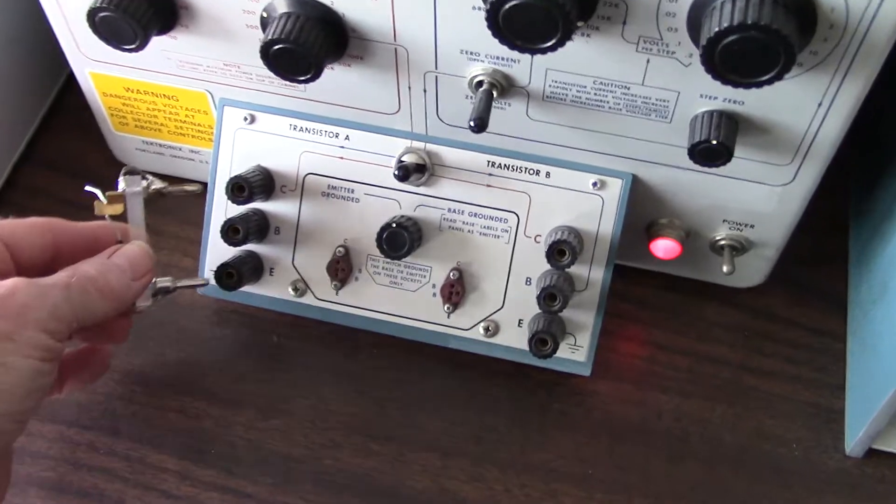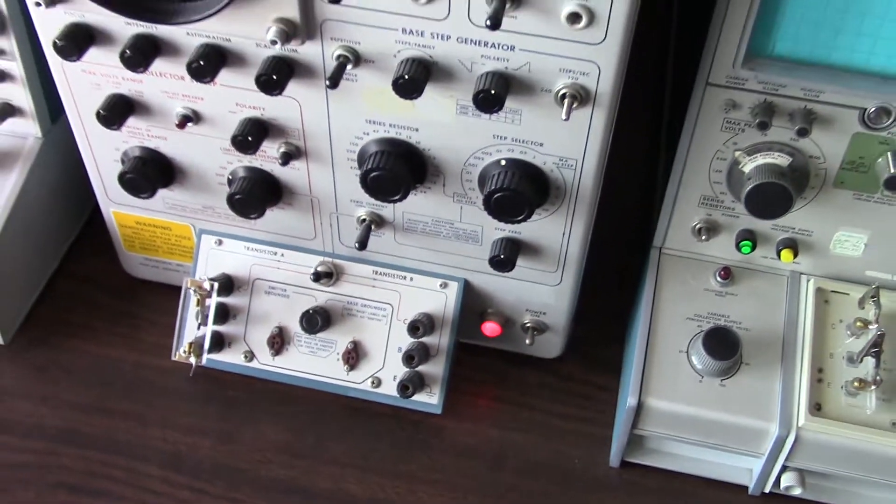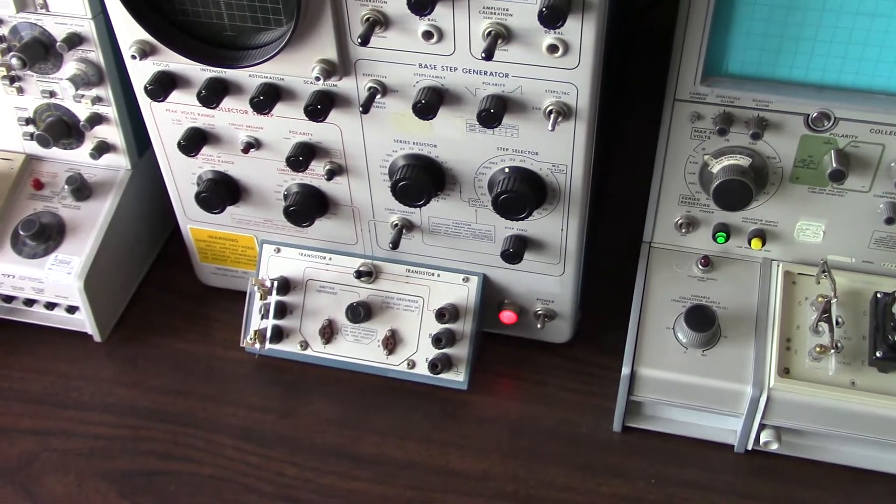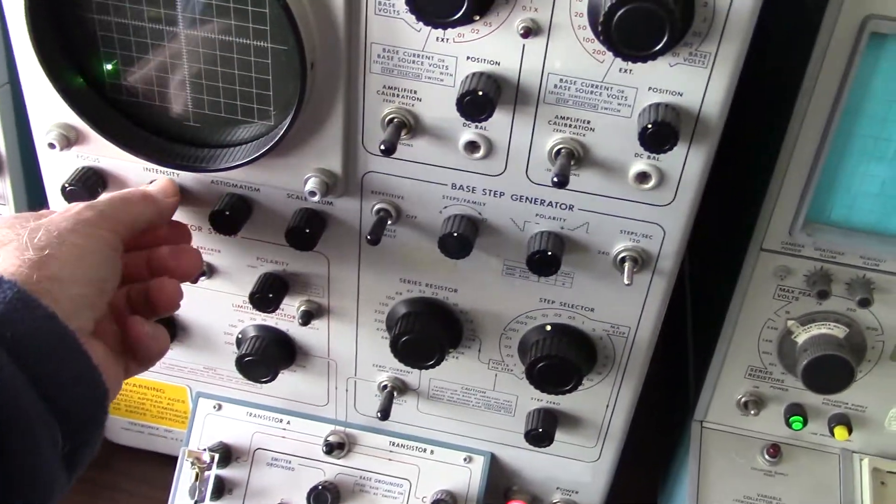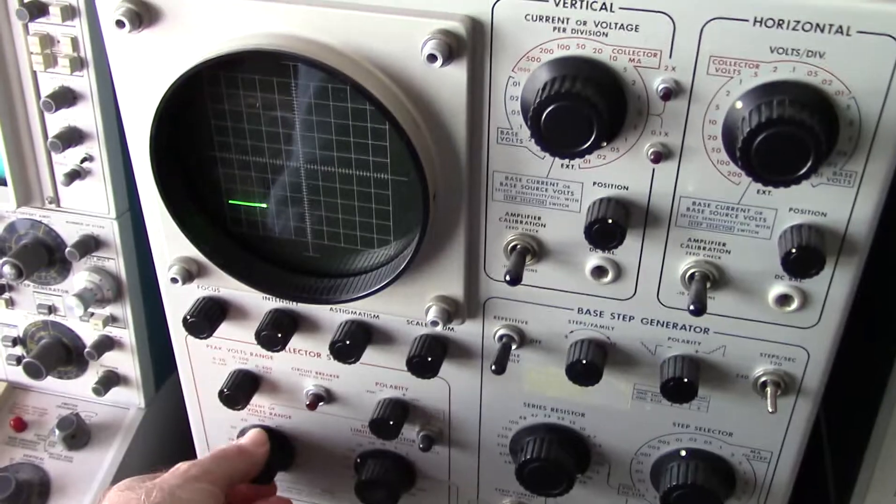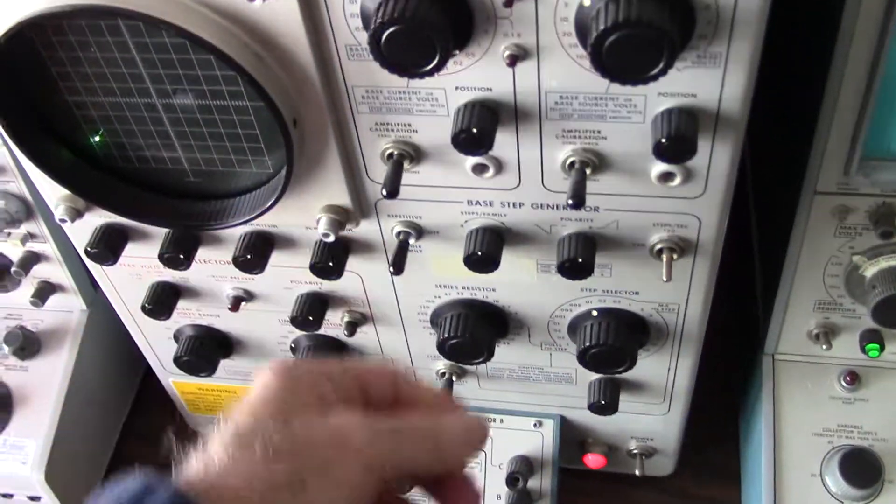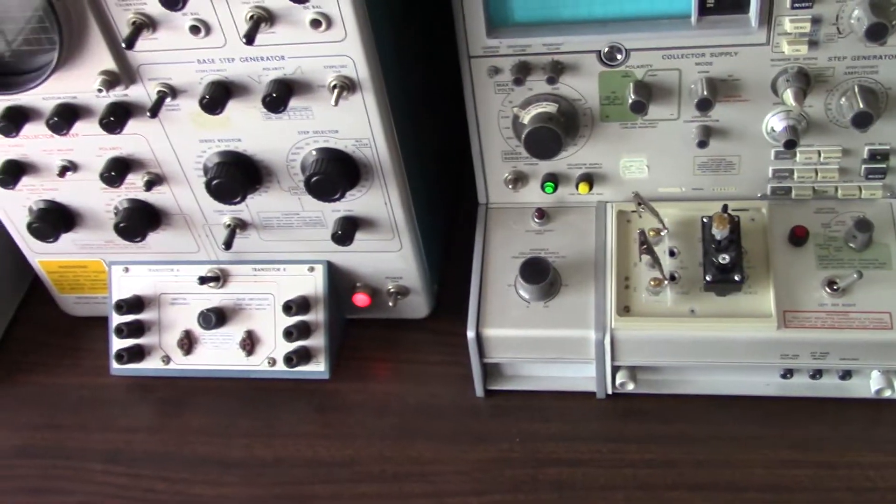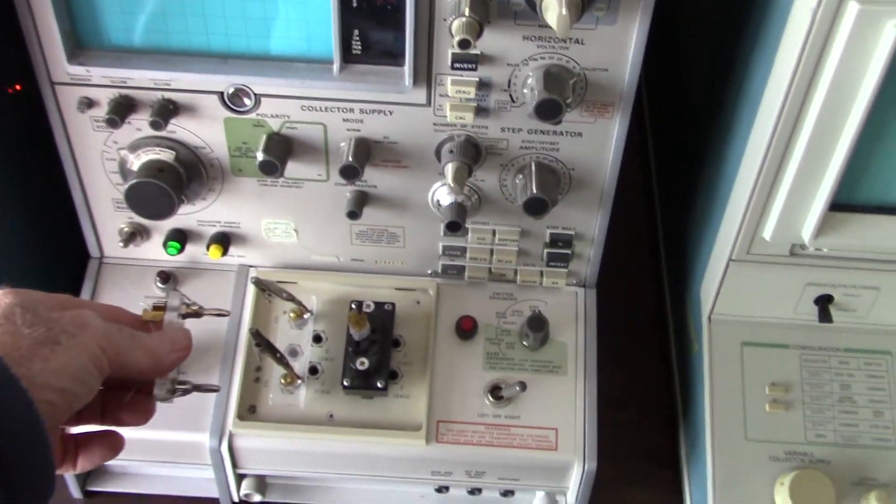it also fits in this old workhorse. This is a 575 curve tracer from way back. I still like to use this one. It still works after all these years and also matches the spacing on this one.